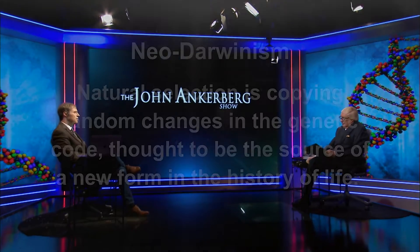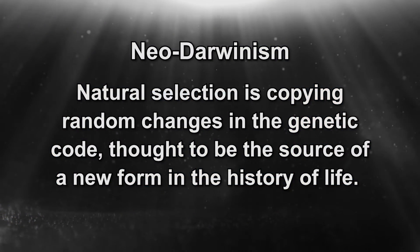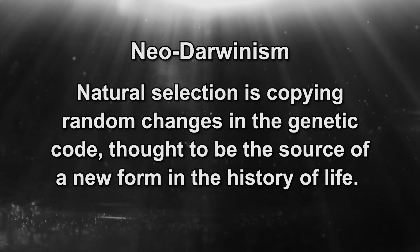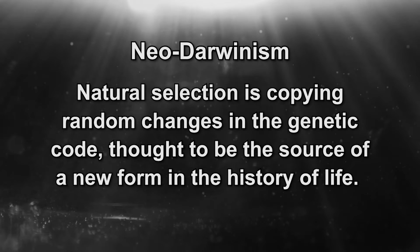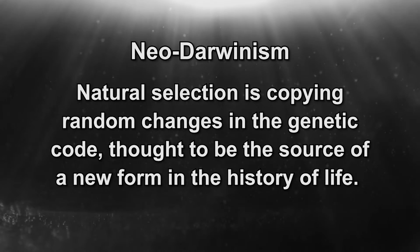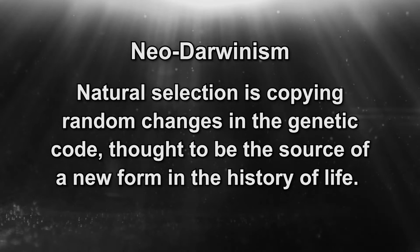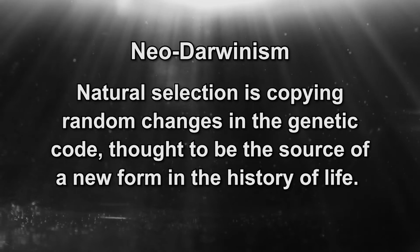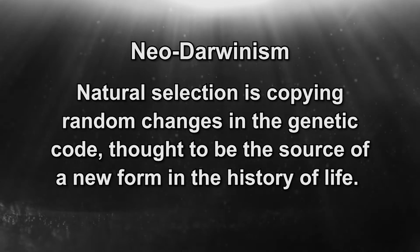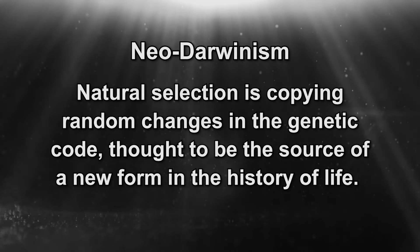Neo-Darwinism is just the idea that natural selection is not only acting on random genetic variations, but also mutations — random changes in the code that are essentially errors. They're random copying errors, and those random copying errors are thought to be the source of new innovation or new form in the history of life.